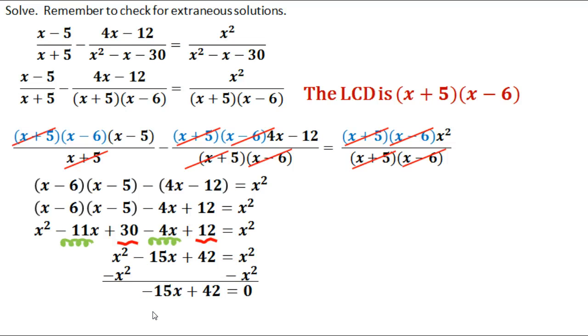So now I just solve it for x. I'm going to move my 42 onto the other side, so I subtract 42 from both sides. I end up with negative 15x equals negative 42. I will divide both sides by negative 15. That gives me negative 42 over negative 15, which, if I reduce it down, will give me 14 fifths.